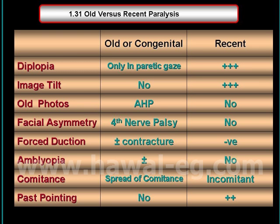M tilde occurs in recent paralysis, while it is absent in old paralysis. Old photos are documentation about the presence of abnormal head posture. Facial asymmetry occurs in congenital fourth nerve palsy.